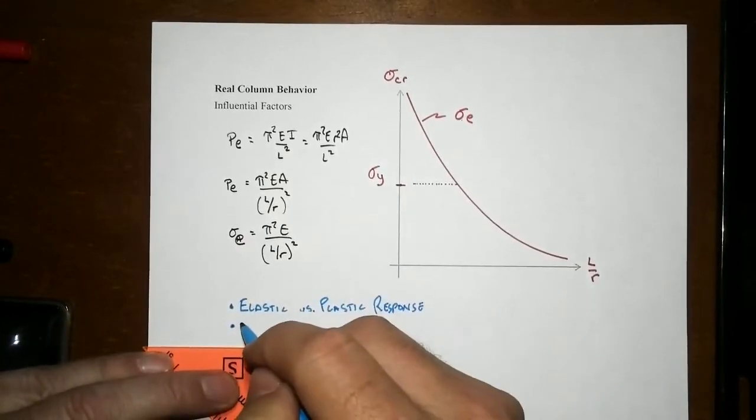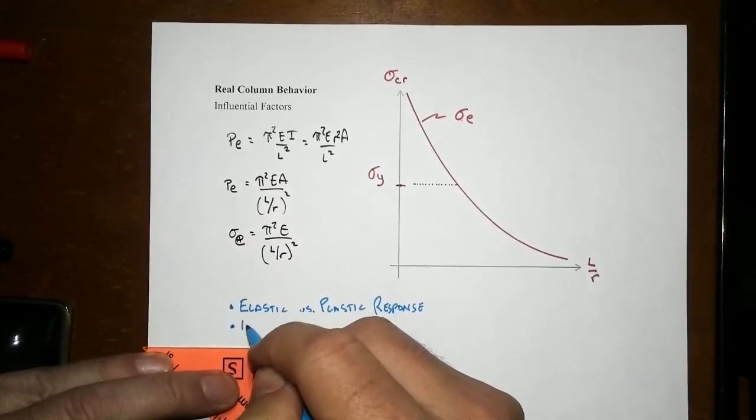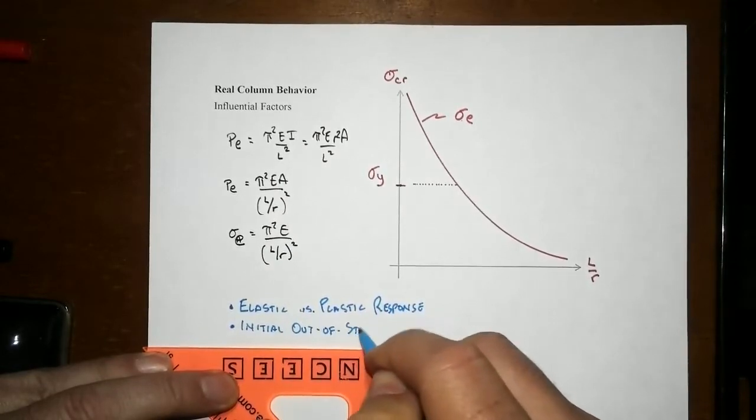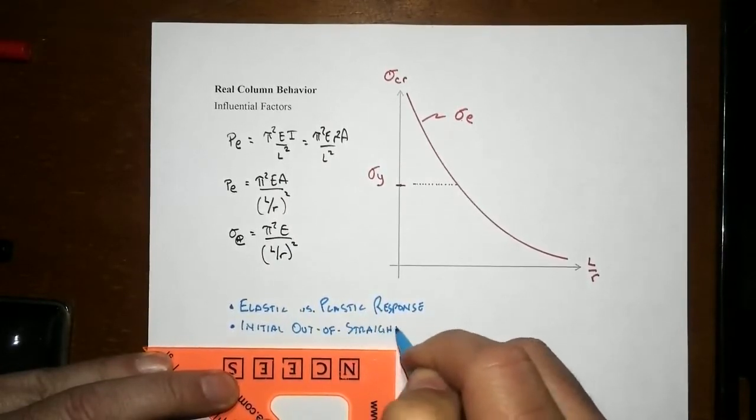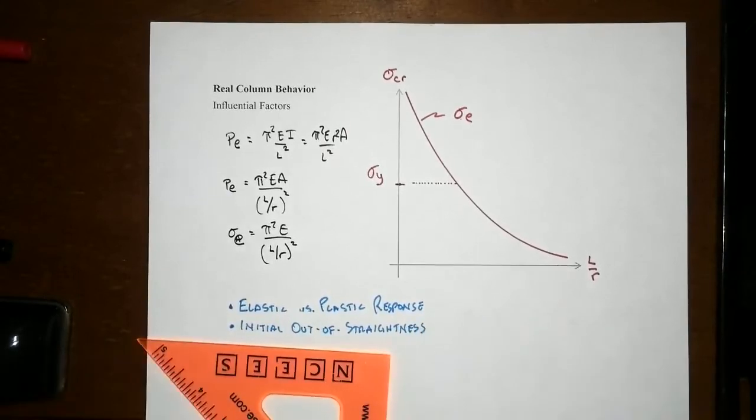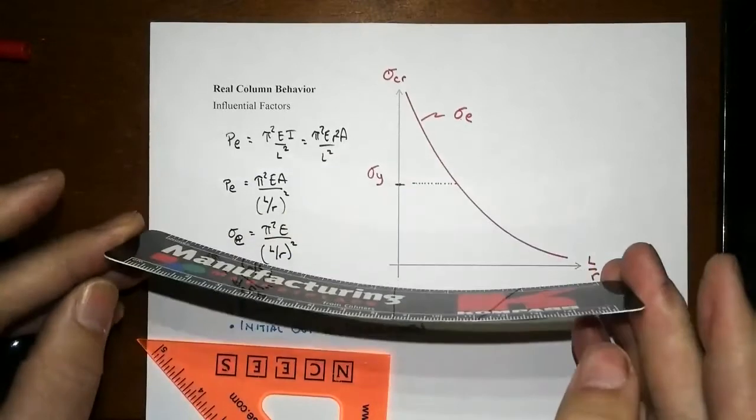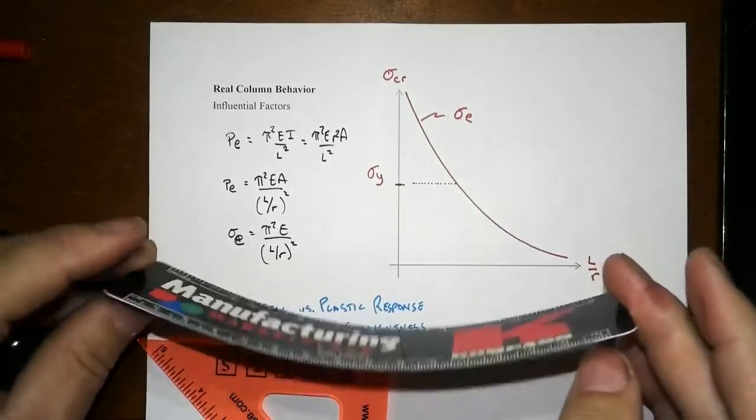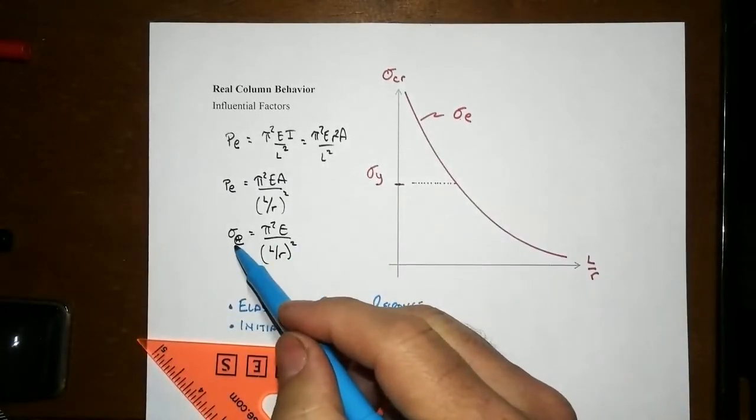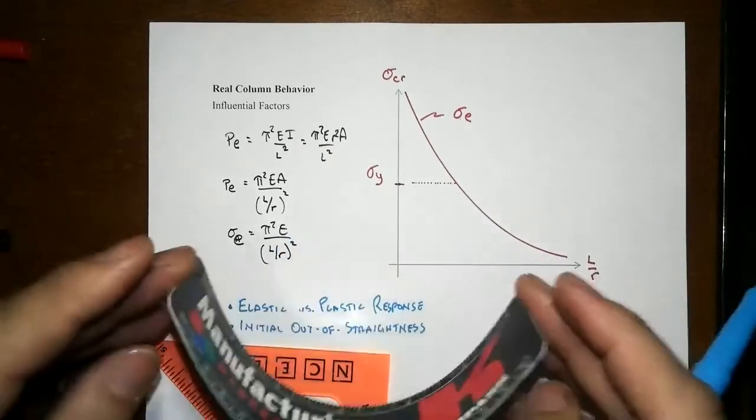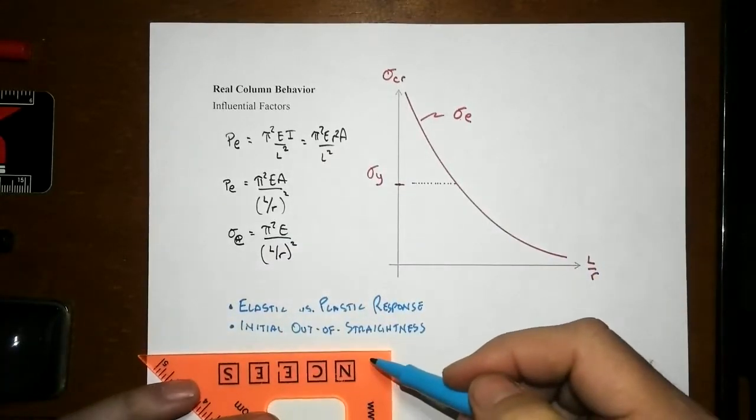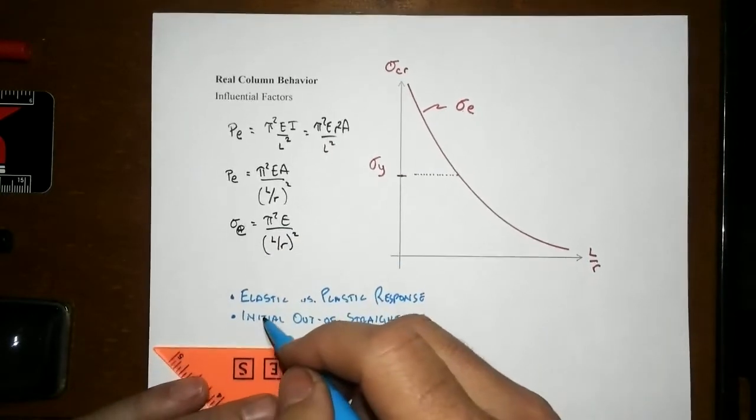That's one thing that will change things. If we have a member that is initially curved, or has initial out-of-straightness, we're going to get different response too. If it's already curved and we load it up, it starts bending right away because of the eccentricity. That means the applied stress will more quickly approach some critical stress. That's a critical thing. There is no such thing as an absolutely perfectly straight column.